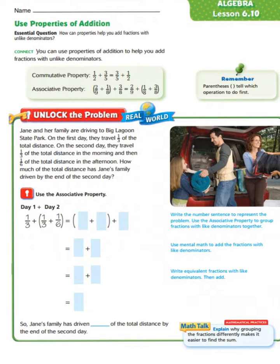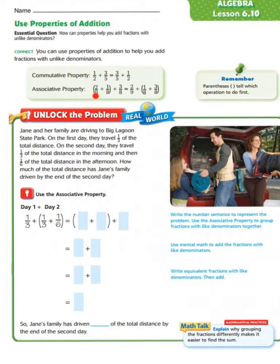We're going to connect back to some of our previous lessons. You can use properties of addition to help you add fractions with unlike denominators. We'll take a look at the commutative property, which shows that one-half plus three-fifths equals three-fifths plus one-half — it's the flip-flop property. We also have the associative property, where we group addends in parentheses, so two-ninths plus one-eighth plus three-eighths is the same as two-ninths plus the group of one-eighth and three-eighths — it changes the way grouping occurs.